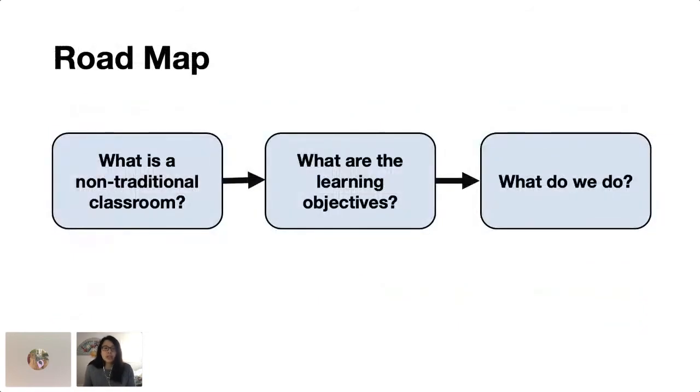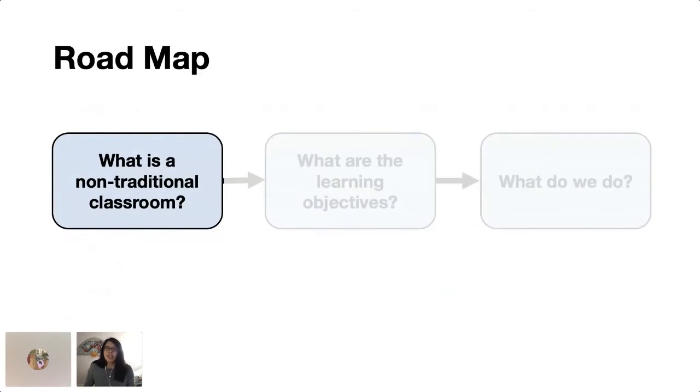So here's a really quick roadmap where each stop of the way corresponds to each of our objectives. We'll define what a non-traditional classroom is, we'll think about our goals and how they're informed by our learners, and then we'll consider different practices from pedagogical research in a formal classroom that can be applied to the non-traditional settings that I want to talk about. So let's get started.